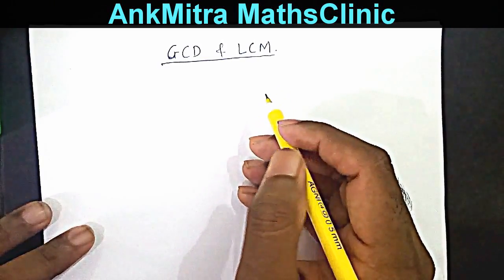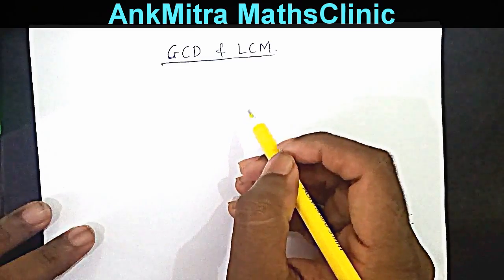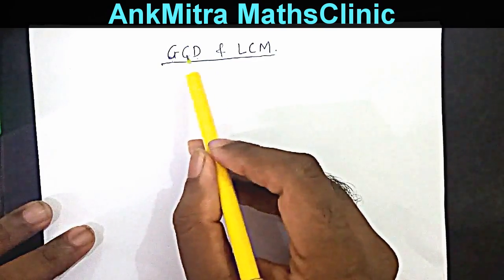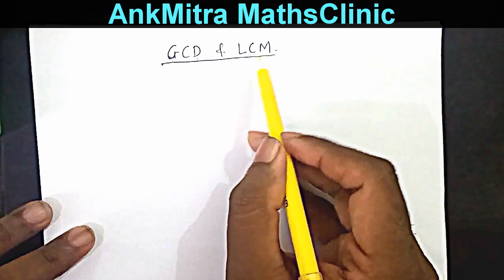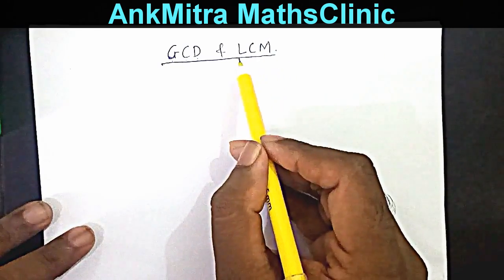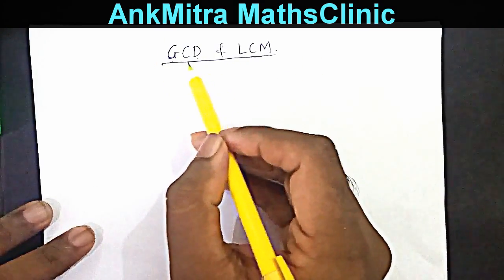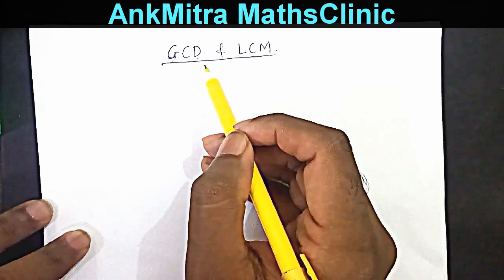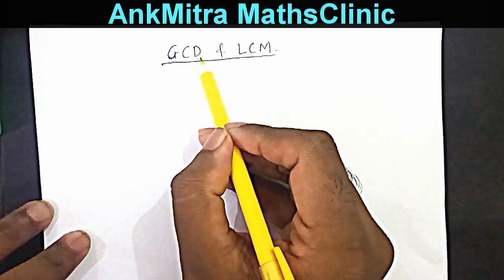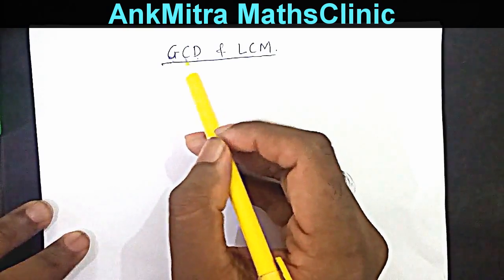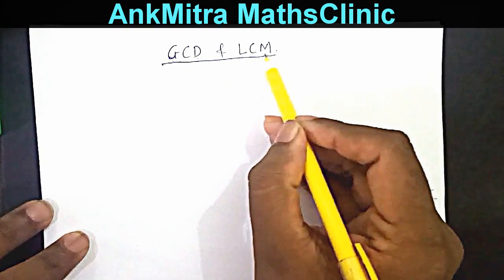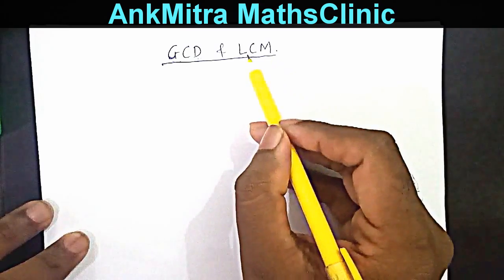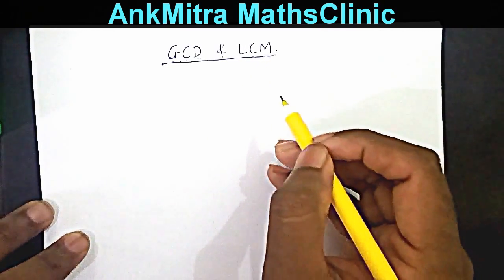In this video, let's look at an easy method to find the GCD, that is the Greatest Common Divisor, also known as Highest Common Factor or HCF. GCD is a number which divides the given two numbers and is the highest possible one. LCM is nothing but the Least Common Multiple — a number that is a multiple of both the given numbers and is the smallest possible one.